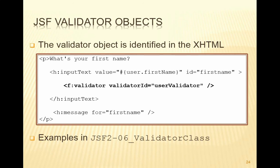So what we've now seen are the two major processes that take place in the lifecycle: conversion and validation. They are crucial to a successful operation of the JSF framework. We can use standard converters and standard validators, or we can use our own by writing custom ones and linking to them in the ways shown. By doing this you're removing all that low-level conversion and validation that you had to do when using servlets and JavaServer Pages, and this is one way in which JSF makes life much easier when developing internet applications.